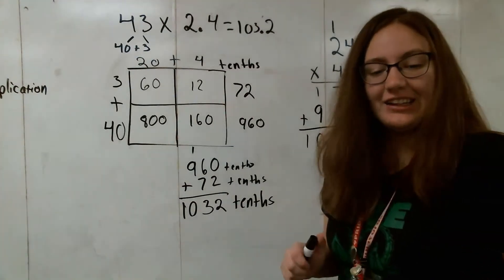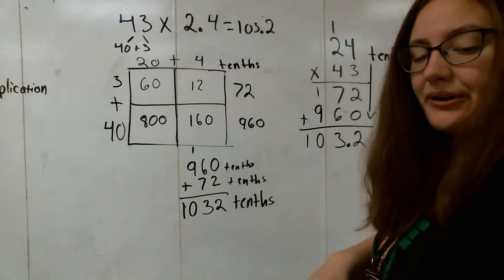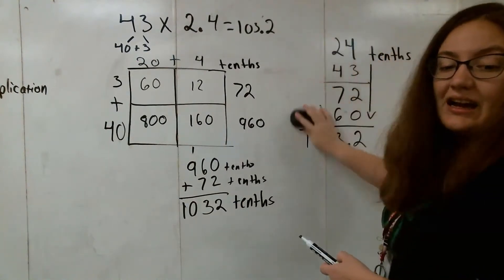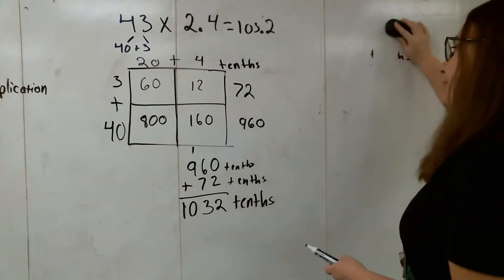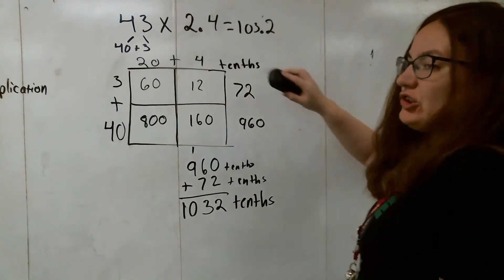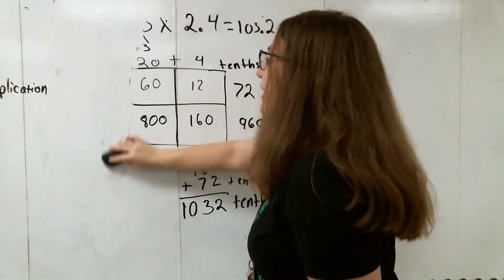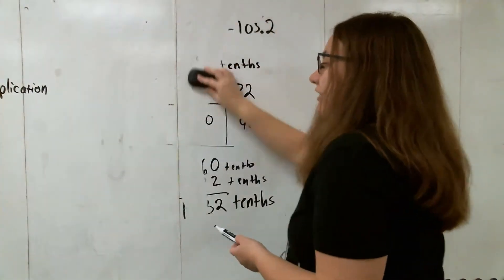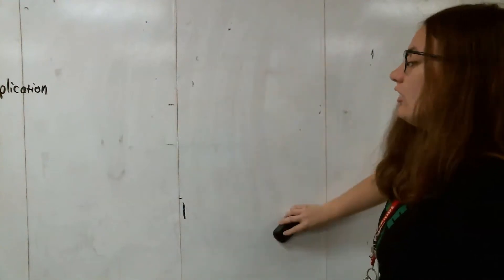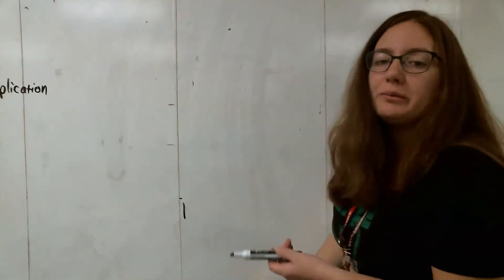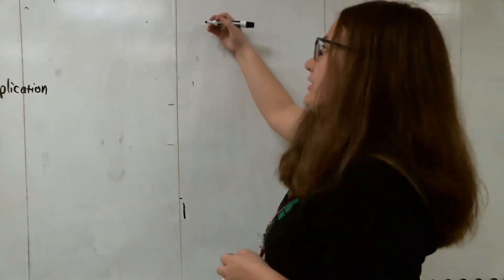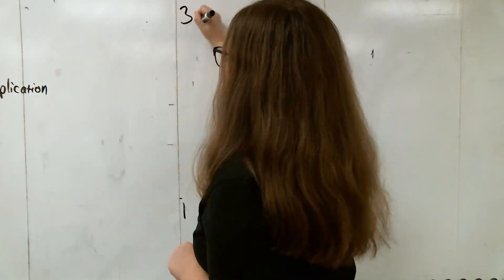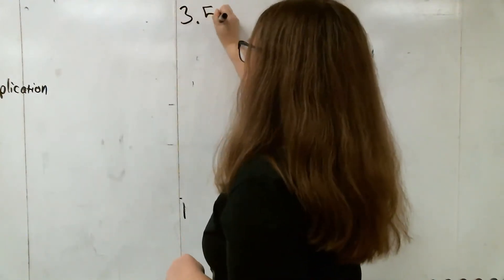Let's take a look at our next problem. This one is 3 and 5 tenths times 42. For the most part in this lesson, you'll just be working with the tenths place so it doesn't get too complicated. Your numbers won't be too large — you'll mostly be doing two-digit by two-digit multiplication, which is a lot simpler than that three-digit multiplication.